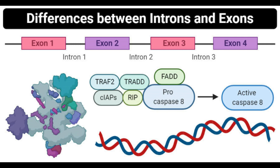By involvement: introns are not involved in protein synthesis, while exons are involved in protein synthesis. By quantity: more introns are present in the nuclear genome than exons, while exons are present in lesser quantity than introns in the nuclear genome. By human genome composition: about 24% of the human genome is composed of introns, while only 1% of the human genome is composed of exons.